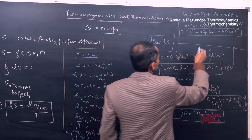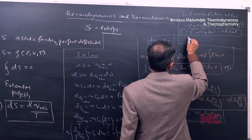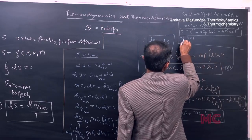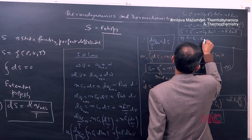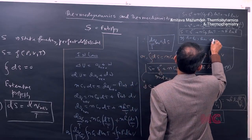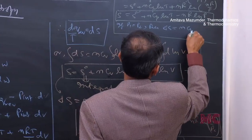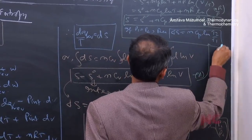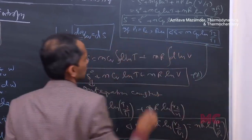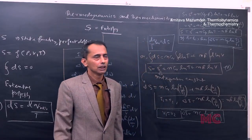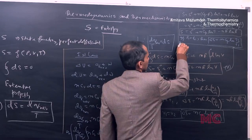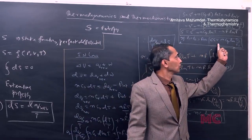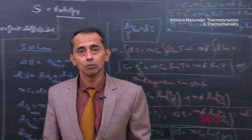If the process occurs at constant pressure (P₁ equals P₂), then ΔS equals nCₚ ln(T₂/T₁). This is very important: when pressure is constant, the change in entropy of the system is nCₚ ln(T₂/T₁).